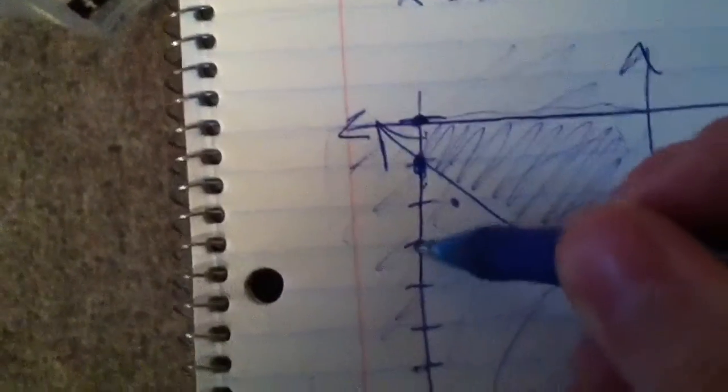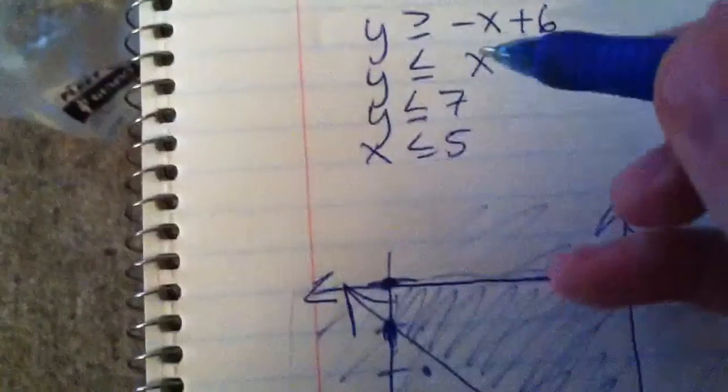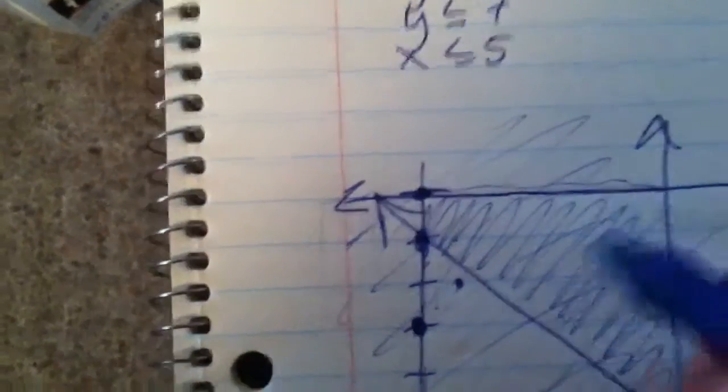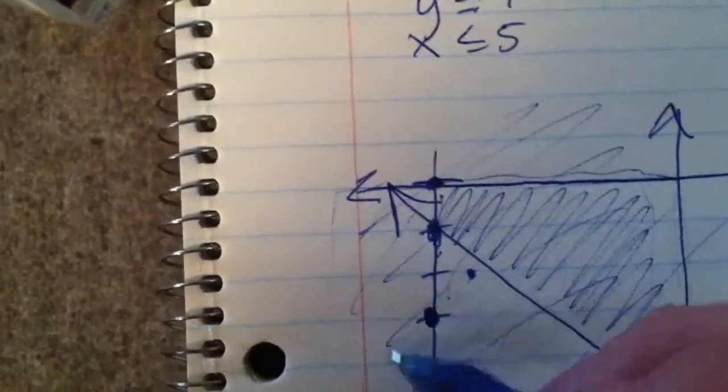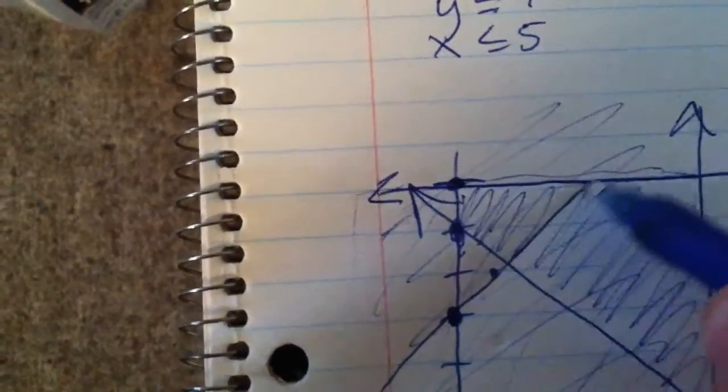We have one more line to do. We got this one. So we start at 4, 1, 2, 3, 4. Up 1, over 1. Generally speaking like this.